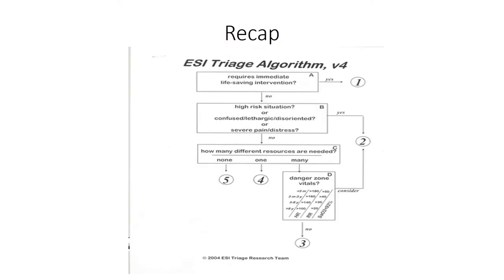To quickly recap: your ESI Level 1 patient is in immediate need of life-saving interventions. ESI 2 is in a life-threatening situation. ESI 3 is your patient who is relatively stable but needs two or more ED resources to remain stable. However, if they are in the danger-vital zone, you may need to escalate them to an ESI Level 2. If your patient is fine and needs only one ED resource, they are Level 4. And lastly, if your patient doesn't need any ED resources, they are an ESI Level 5.